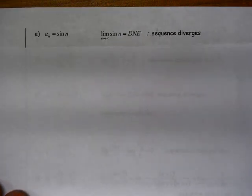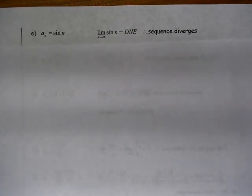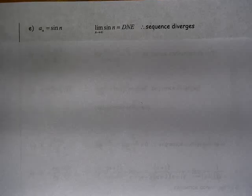We could have a sequence defined as sine of n, and we know that the sine of n does not have a limit as n approaches infinity because it oscillates and changes its value. It never approaches a specific value.